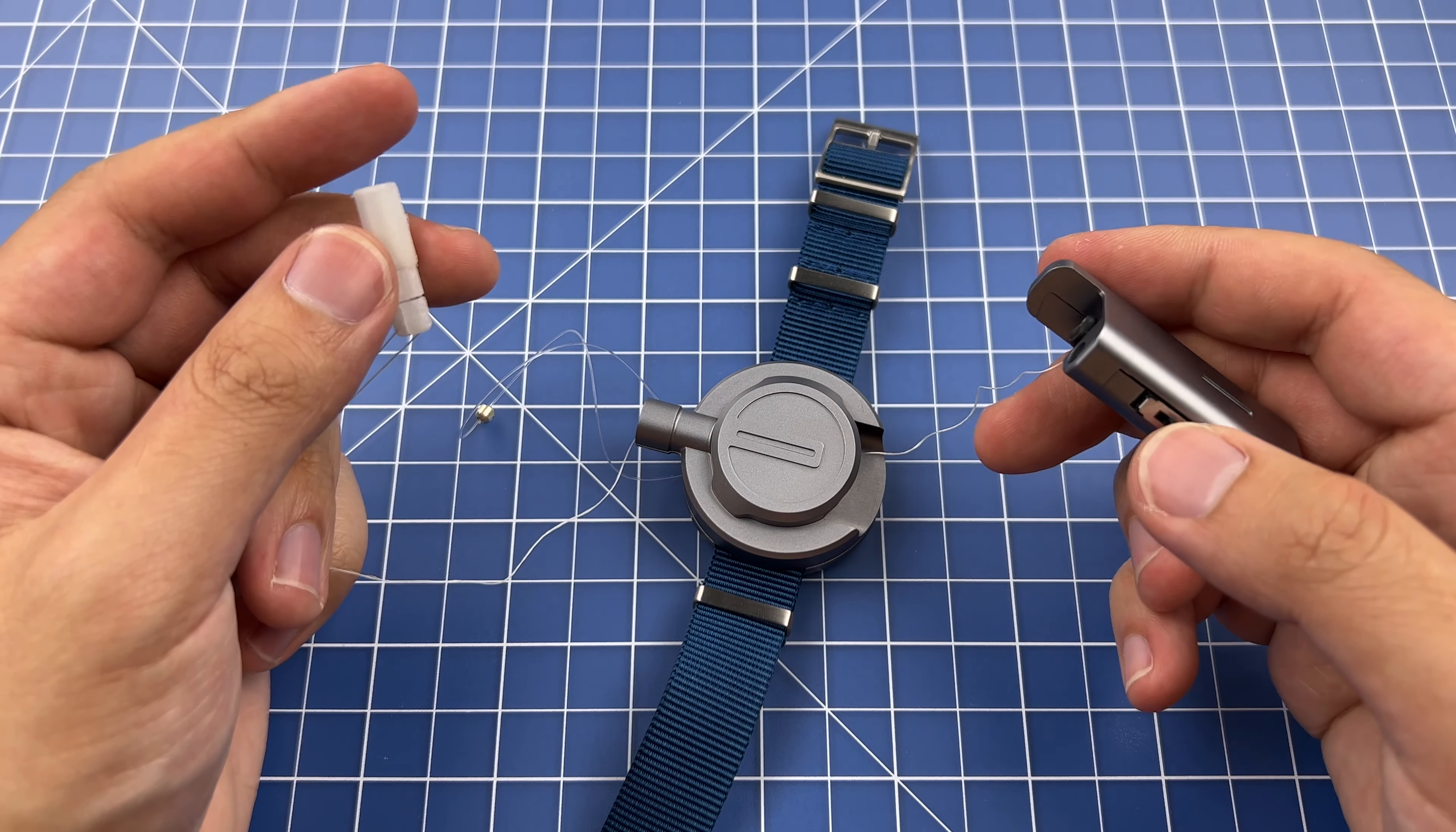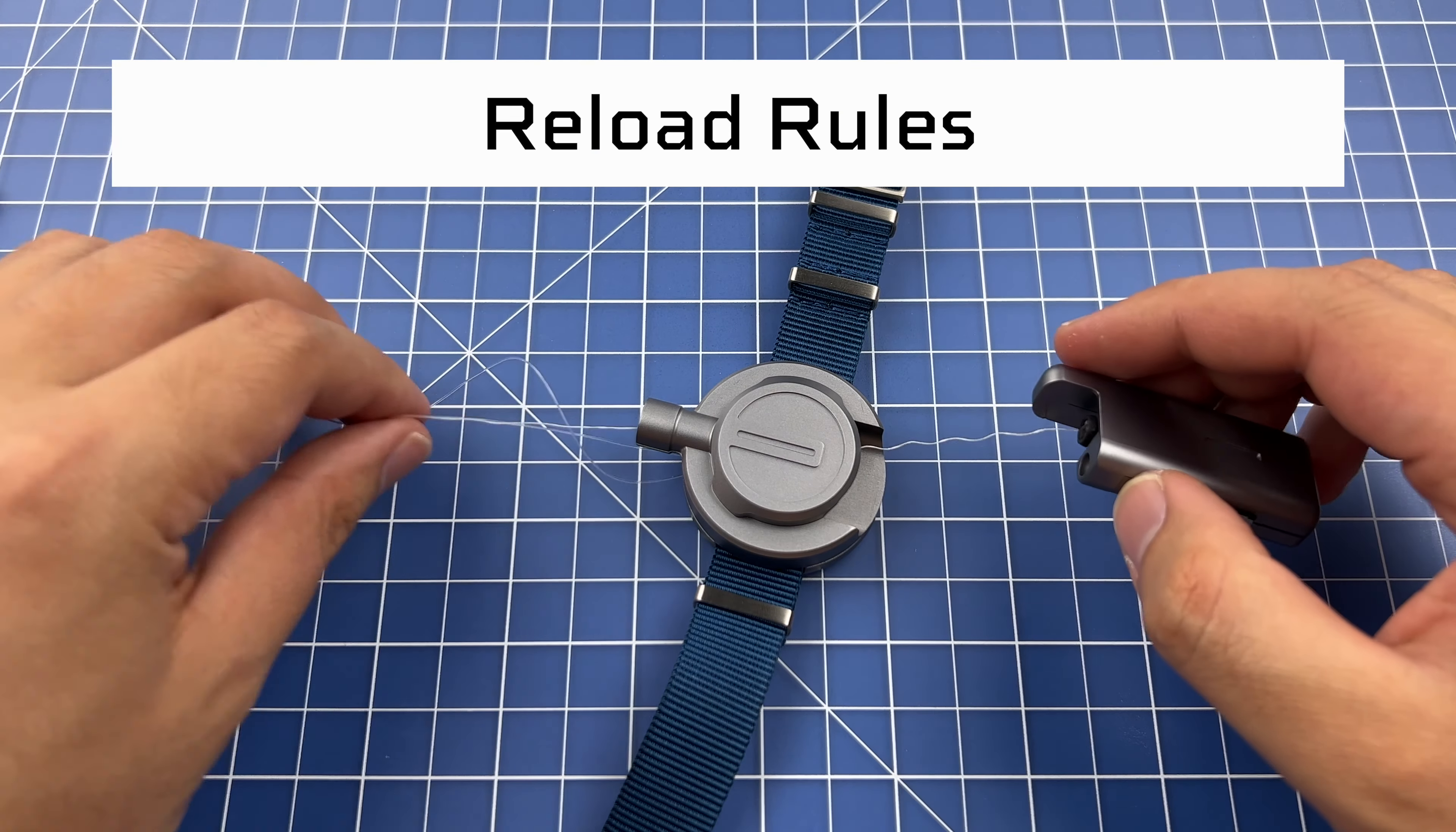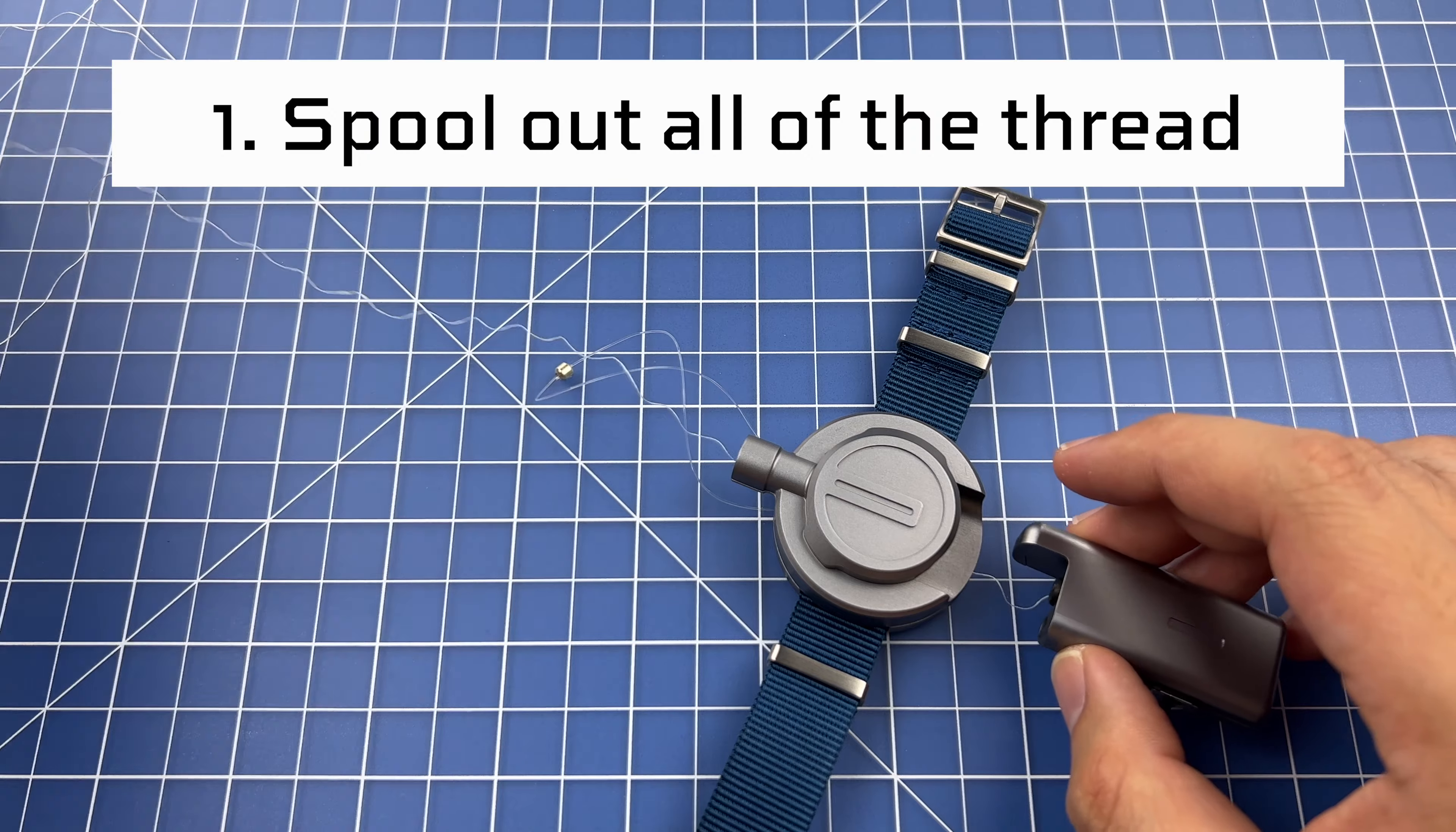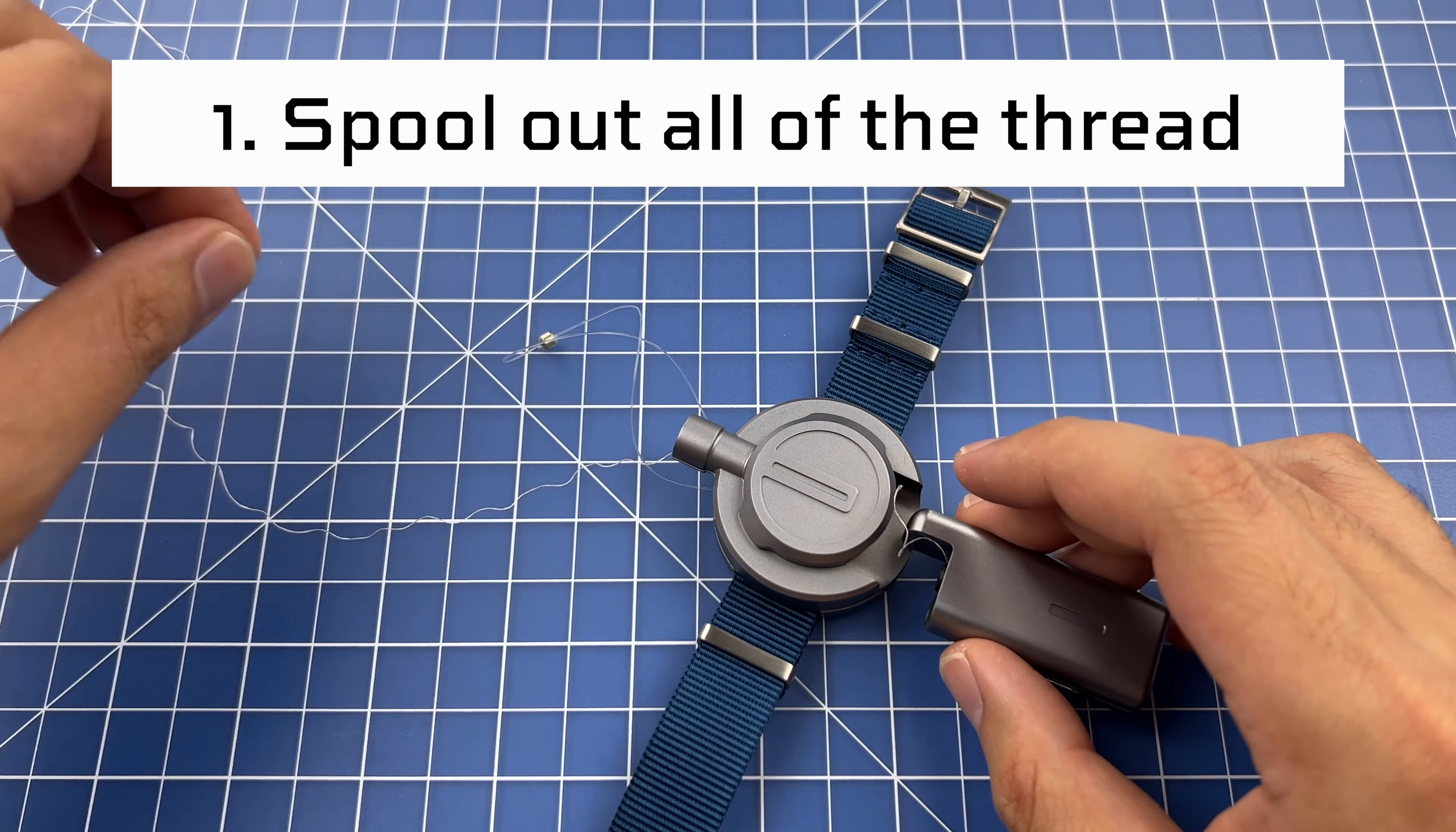Now that the thread cartridge and projectile are connected, we're going to show you how to load and reload the Magnus. First, we're going to spool out all of the thread. This is to simulate having shot out the Magnus. Every time you shoot out the Magnus, make sure you spool out all of the thread until it doesn't go out anymore.